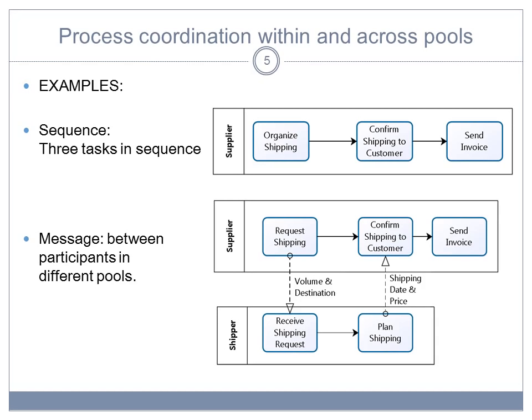So the process will start with request shipping at the suppliers, and then the supplier would continue with confirmed shipping to customer, but has to wait for input data. So it means that the next task that will happen is receive shipping request that receives volume and destination, and this is done by the shipper. Then you go on with planned shipping at the shipper's site, and then when this task is finished, shipping date and price are sent to the supplier.